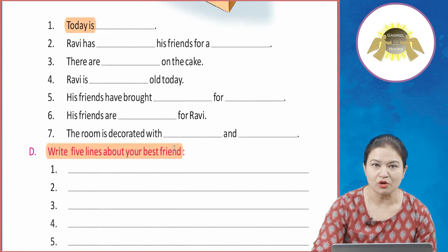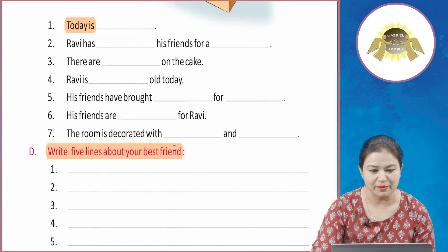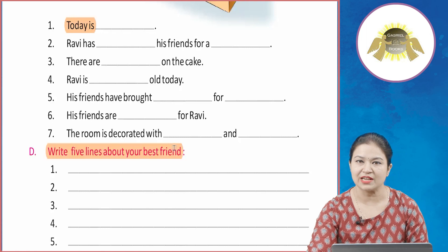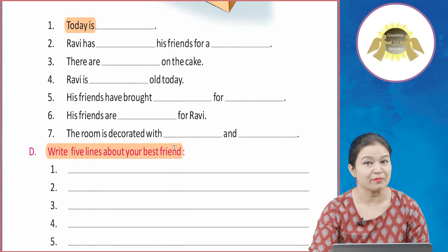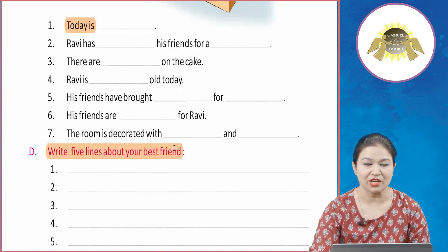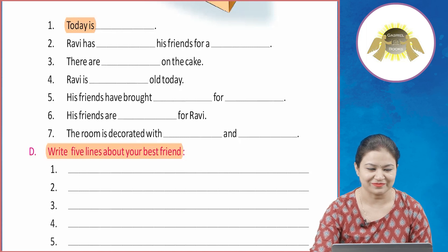Now write five lines about your best friend. Aapko aapne best friend ke baare mein five lines likhni hain. Aap jaante ho ge unke baare mein — uske baare mein aapko five lines likhni hain aur is exercise ko aapne complete karna hai. I hope aapko yeh chapter achhe se samajh aaya. Is exercise ki practice aapko zaroor karni chahiye.